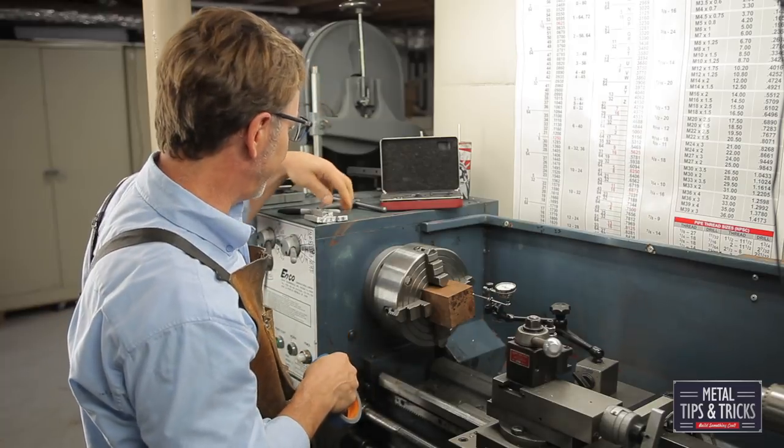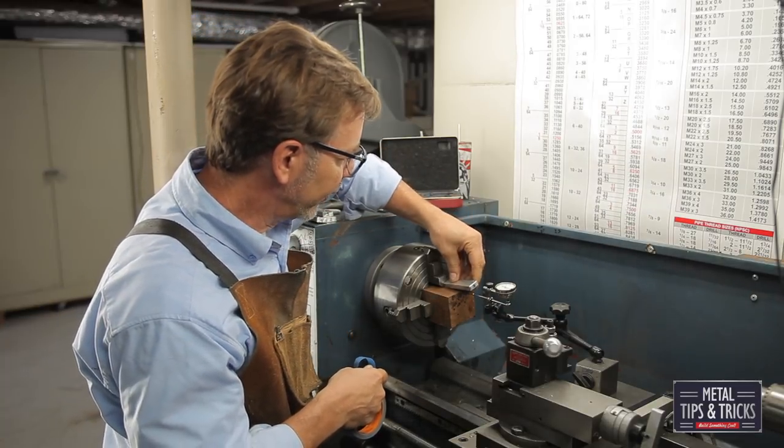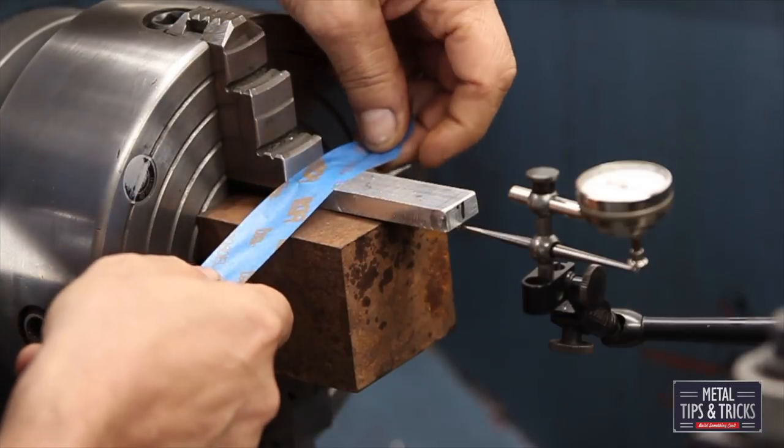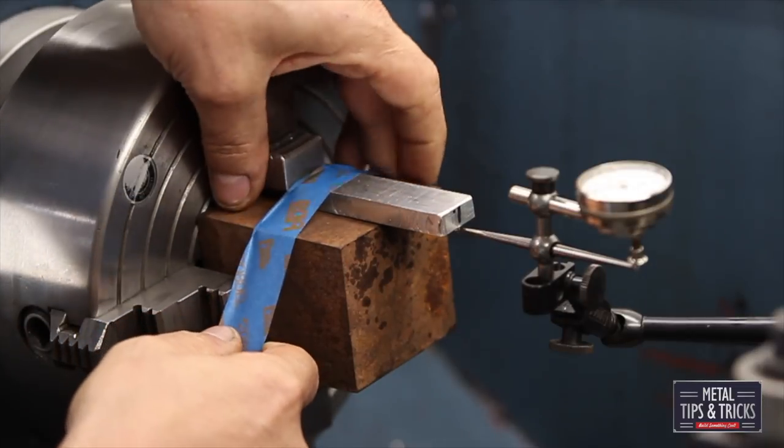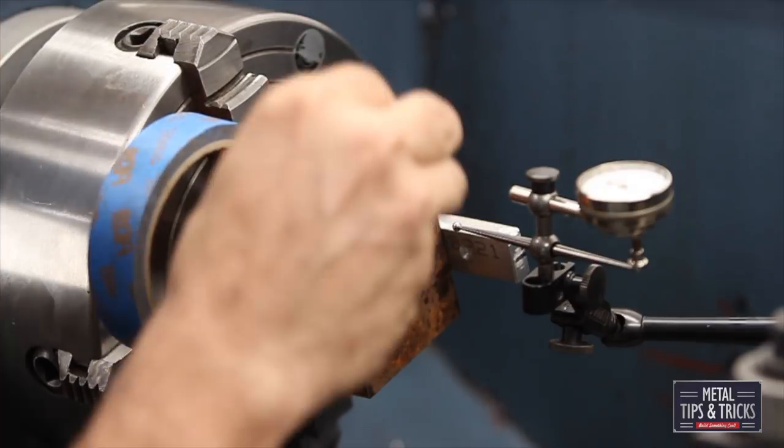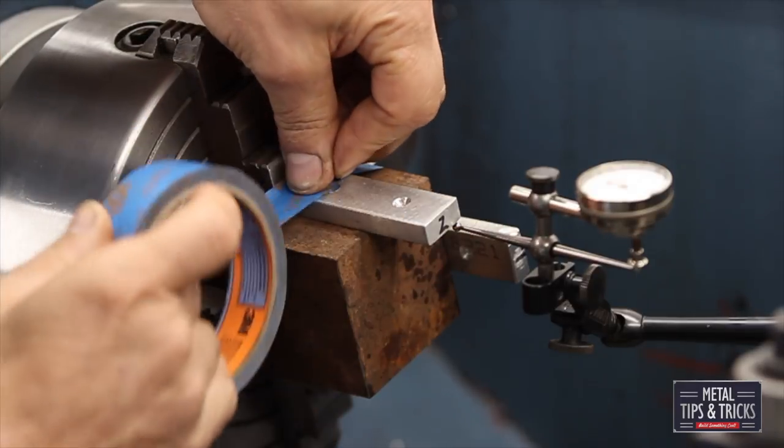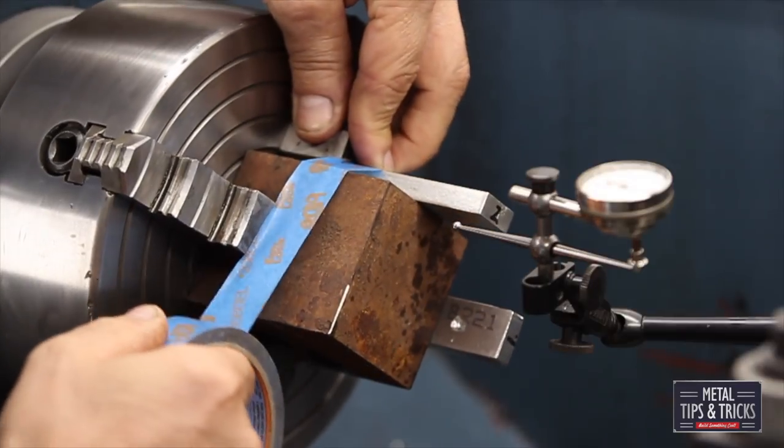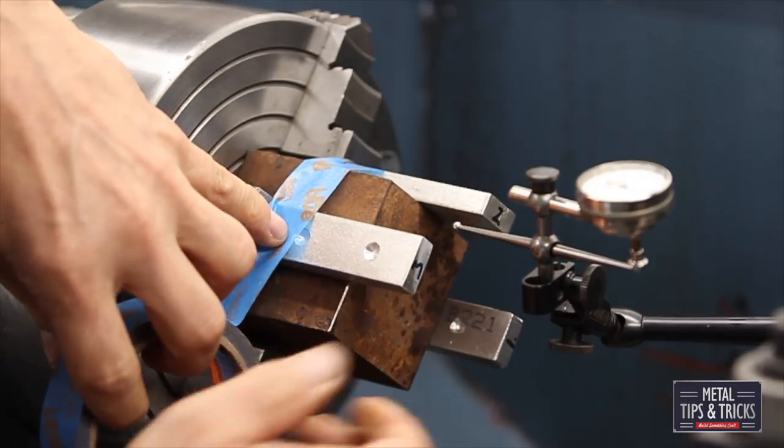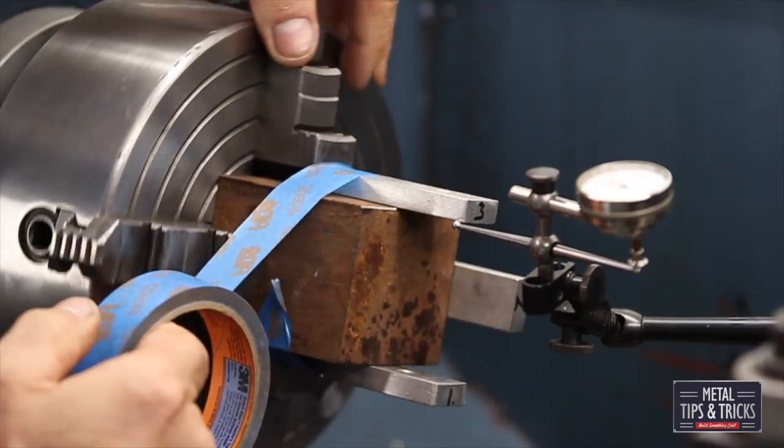So we're going to simply use some tape, some aluminum bars I've got here. You can use anything that you want for this part. And we're just going to simply keep adding them. You'll notice I've put numbers on these, and I've put these numbers on there more for you guys than it is for me, just so you can keep track of what I'm doing.